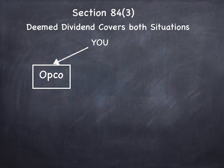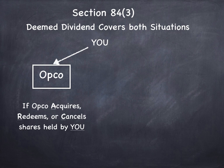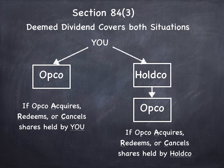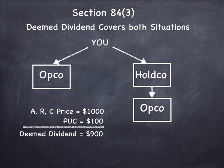Let's say you own an operating company. If that operating company acquires, redeems, or cancels shares that are held by you, 84.3 can apply. If the HoldCo owns the OpCo and the OpCo acquires, redeems, or cancels shares held by HoldCo, 84.3 might apply to this situation. Here's how it works. ARC stands for Acquisition, Redemption, or Cancellation. So if the ARC price is $1,000 and the paid-up capital (PUC) of those shares is $100, that's going to give you a deemed dividend of $900.